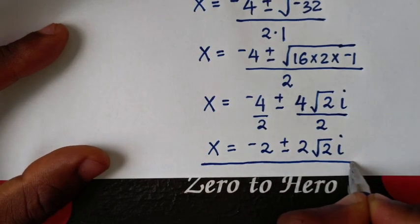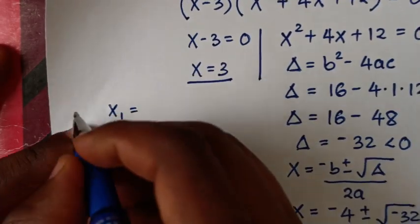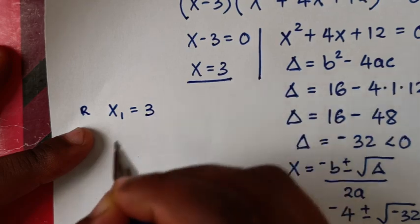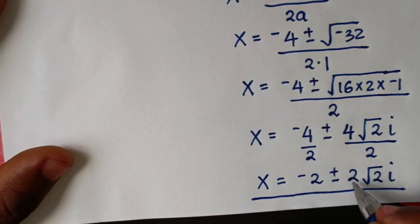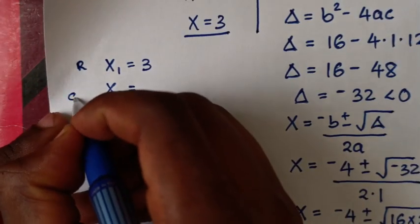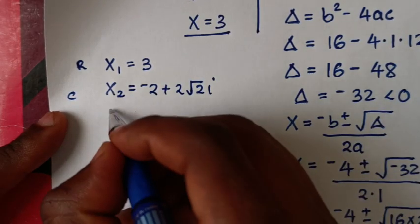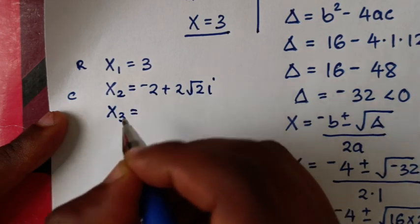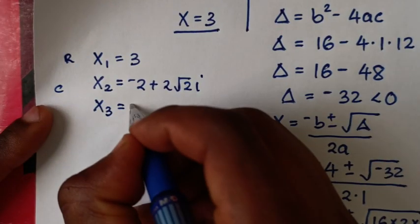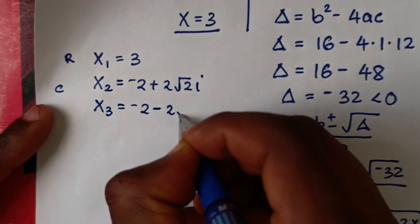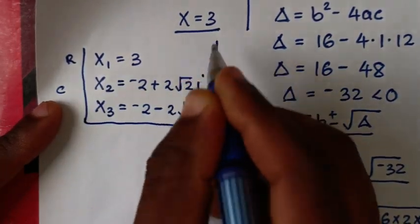So from here we have 2 complex solutions. Therefore, our conclusion: the first value of x, which is the real solution, is 3. The second value of x is equal to negative 2 plus 2 square root of 2i. The third value of x, which is also a complex solution, is negative 2 minus 2 square root of 2i. So these are all the values of x in this problem.